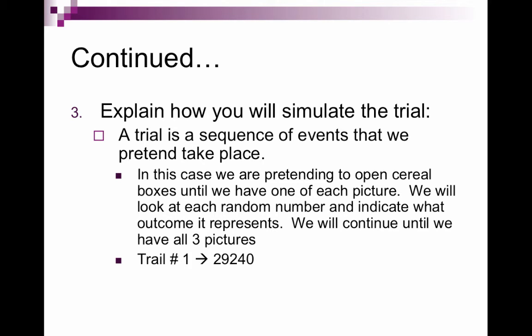So for example, our first trial would be two, nine, two, four, zero. A two was David Beckham. The nine was Serena. Two was Beckham. Four was Beckham. Zero was Woods. I would stop here because now I have Beckham, Williams, and Woods. So again, using the letters, B would be the two. Serena Williams. B would be Beckham. B would be Beckham. W would be Woods. I'm looking to have one of each. I have one of each. I'm happy with that.